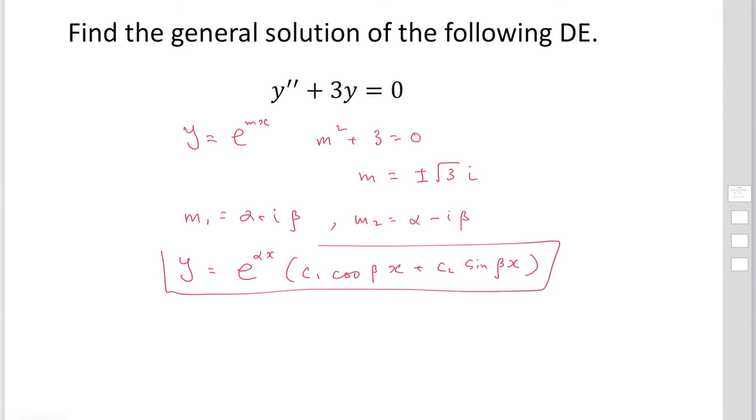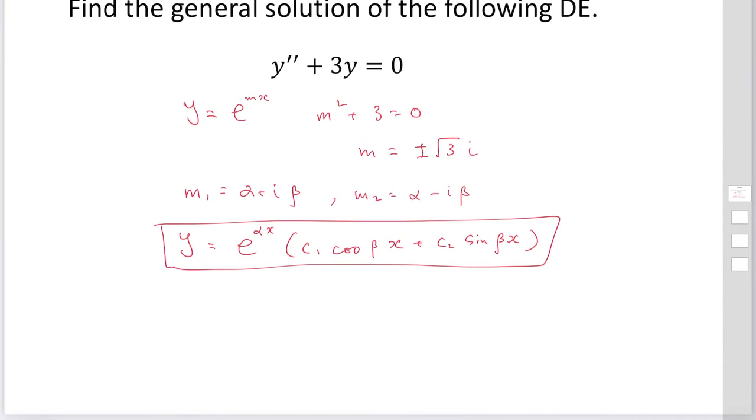We can use this expression to find the solution to this practice. So m = ±√3i. In this case, α = 0 and β = √3.